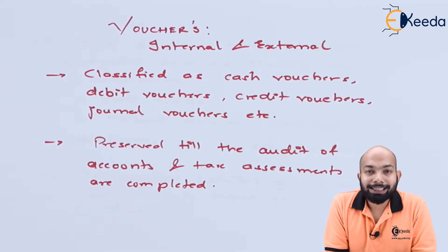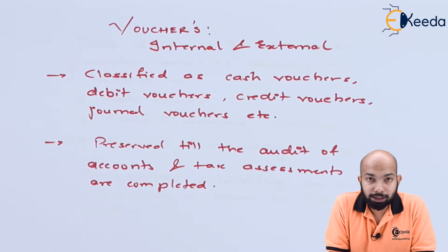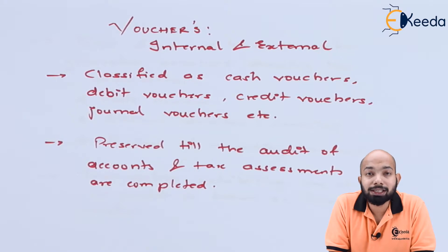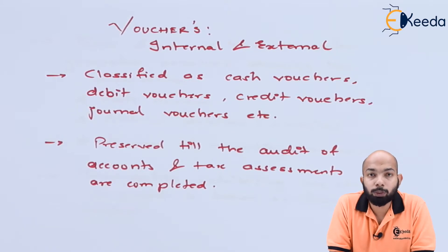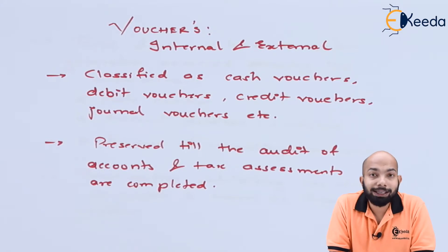Vouchers — we have already learnt about them as source documents. When any transaction takes place between two or more parties, an invoice is generated. This invoice can specifically prove that a particular transaction took place. To understand whether a transaction took place, we have a voucher or source document that proves a transaction happened between the buyer and the seller.